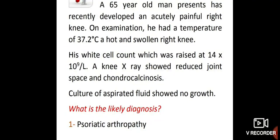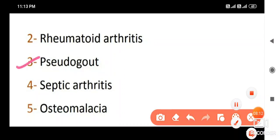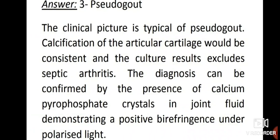A 65-year-old man presents with an acutely painful right knee. On examination, he has a temperature of 37.2°C, a hot and swollen right knee, white cell count raised at 14,000. A knee X-ray showed reduced joint space and chondrocalcinosis. Culture of aspirated fluid showed no growth. The diagnosis is pseudogout. The clinical picture is typical of pseudogout — calcification of the articular cartilage is consistent, and culture results exclude septic arthritis. Diagnosis is confirmed by calcium pyrophosphate crystals in joint fluid showing positive birefringence under polarised light.